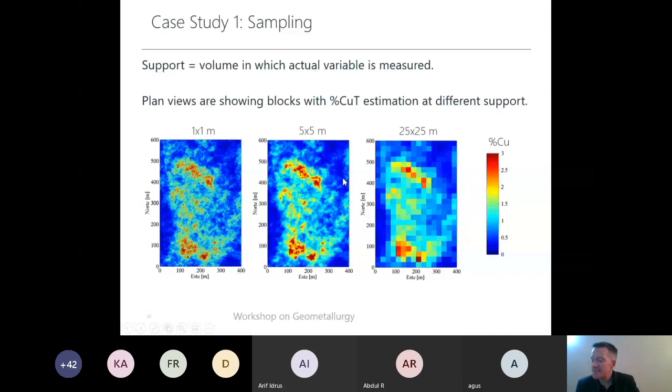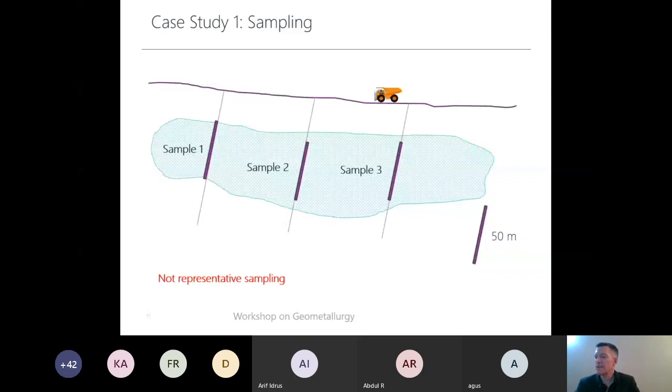Sampling is very important. It's a basic for everything. For instance, we have this section, this beautiful track, or took, as others say. Imagine these are drill holes. We would like to sample in this domain. But what happened here? This is not a representative sample. Look at the size of this support: 50 meters.